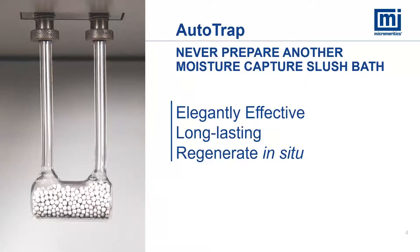The AutoTrap replaces the conventional slush bath with zeolite beads to remove moisture during TPR experiments. This is a more effective method, ensuring time is not spent making slush baths or worrying if the slush bath will last the length of the experiment. The AutoTrap can be used for many hours without the risk of losing its effectiveness, and it can be regenerated on the instrument with a program method step during any experiment.